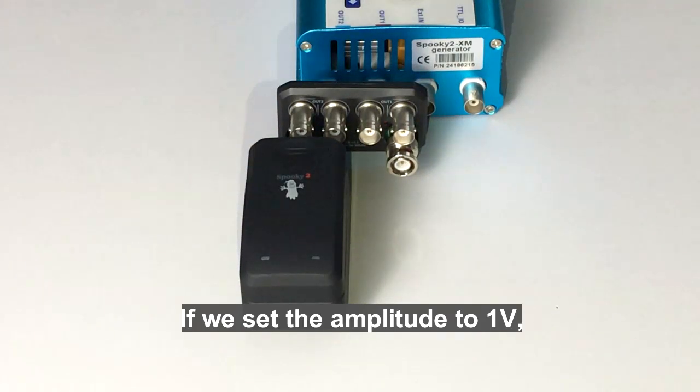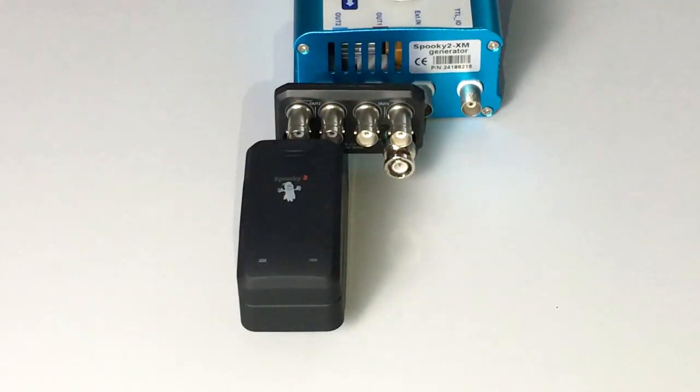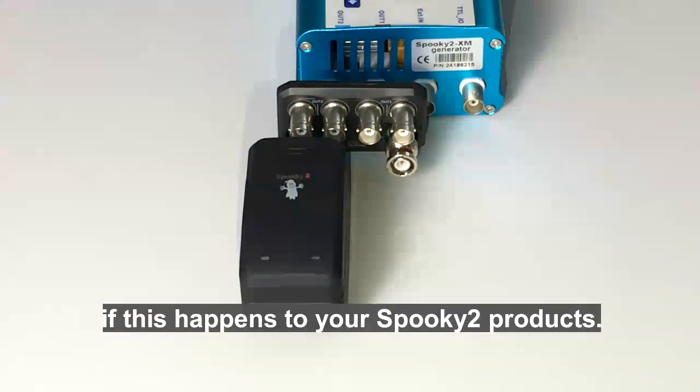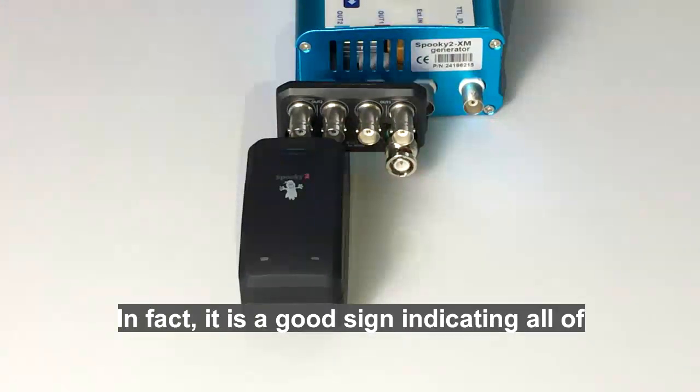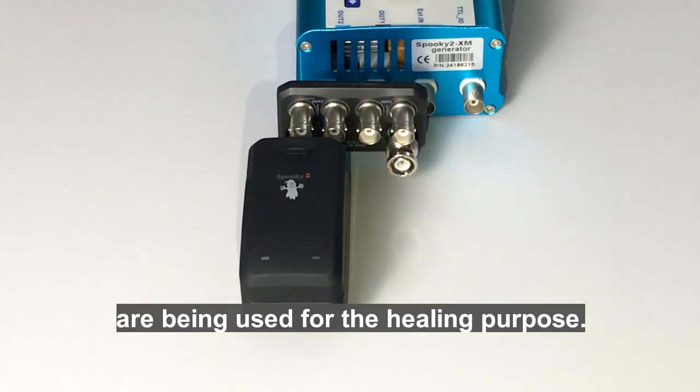If we set the amplitude to 1 volt, there is no LED light showing. Please do not worry if this happens to your Spooky2 products. In fact, it is a good sign indicating all of the frequency voltage are being used for the healing process.